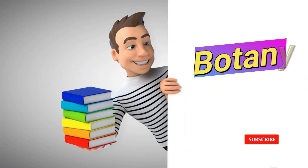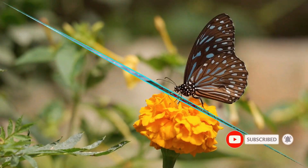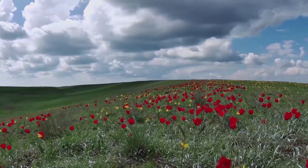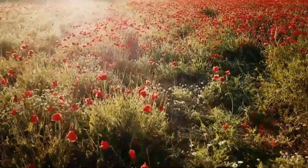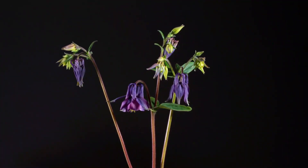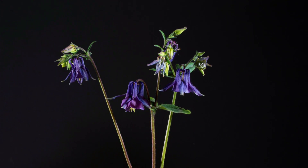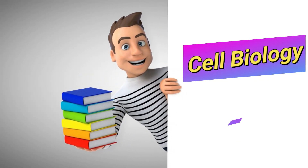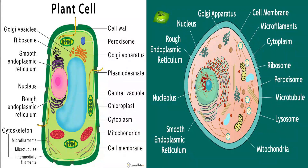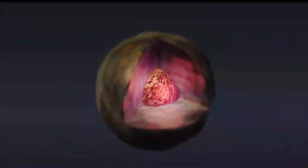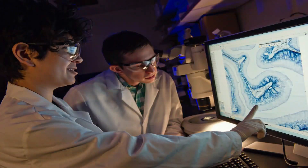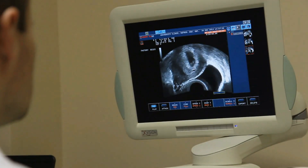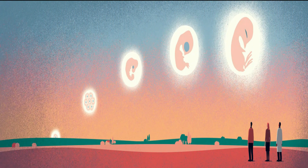The next branch is botany. The scientific study of the physiology, structure, genetics, ecology, distribution, classification, and economic importance of plants is called botany — that is, botany is the study of all processes of plants. The next branch is cell biology, also called cytology. It is the study of cell structure and function. Cell is the fundamental unit of life. The next branch is developmental biology — the study of the development of living organisms from zygote to full adult form.